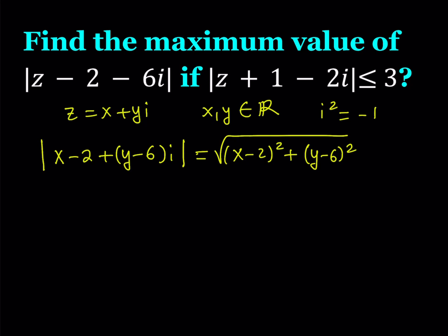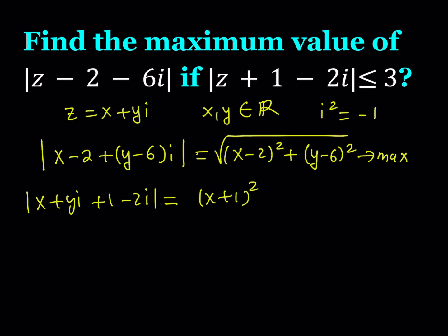We want to maximize this value. Using the given condition, you get the absolute value of x plus 1 quantity squared plus y minus 2 quantity squared, and the square root of that is less than or equal to 3.